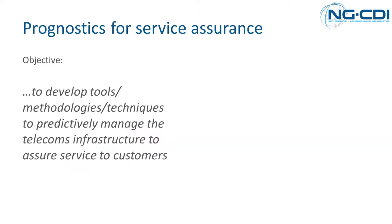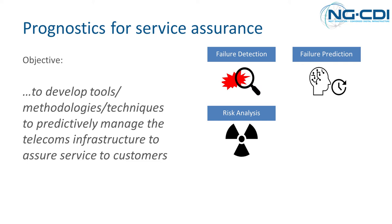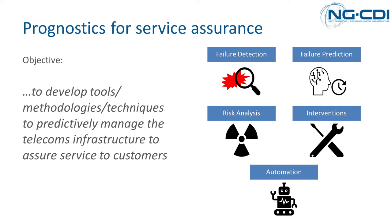The objective of this theme is to develop tools and techniques to predictively manage the telecoms infrastructure so that we can assure service to our customers. The key research questions driving our work are: how can failures of critical infrastructure elements be detected early enough to trigger interventions to reduce service impact? How can these failures be predicted with sufficient confidence to enable planned interventions? How can the risk of failures be determined in terms of impact on service assurance metrics? How can interventions be planned effectively with the right balance of cost, risk, and performance? And finally, how can all of this be done in an autonomous manner?